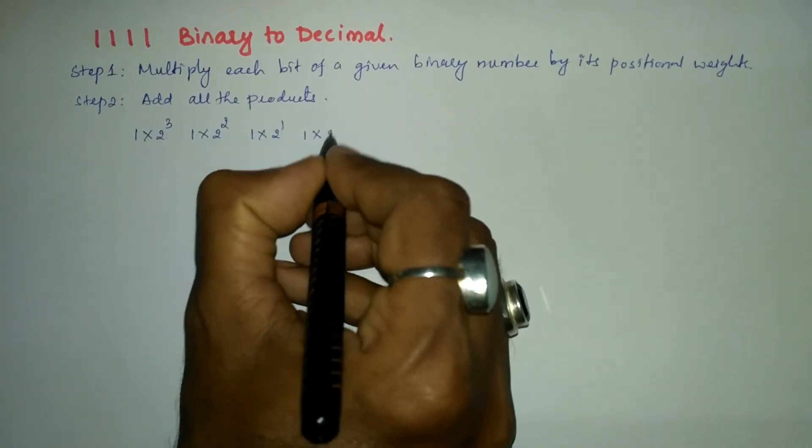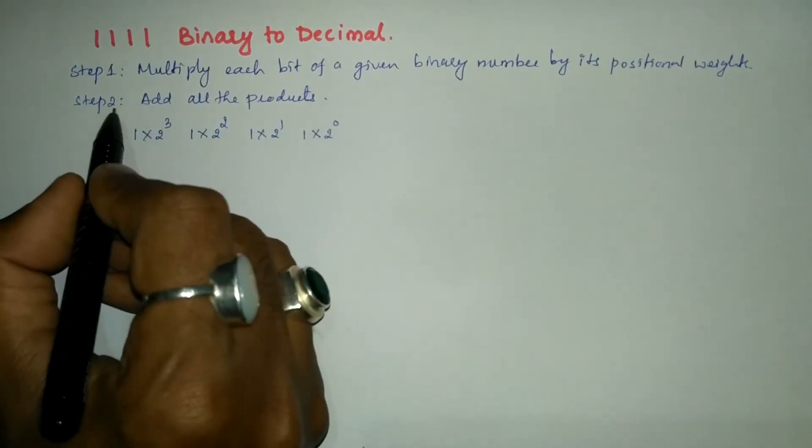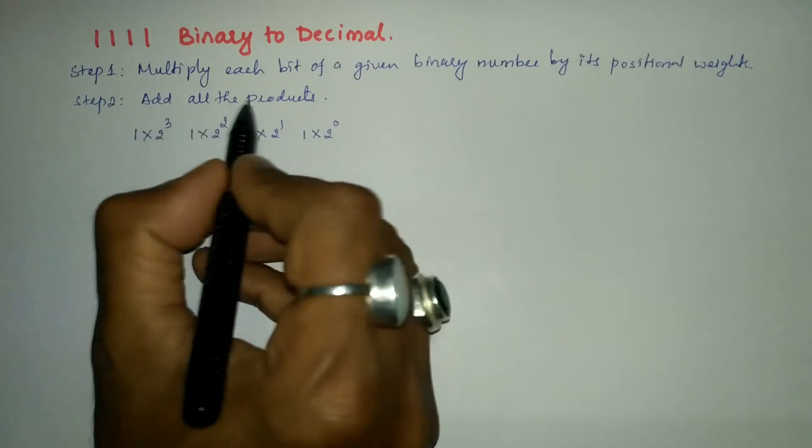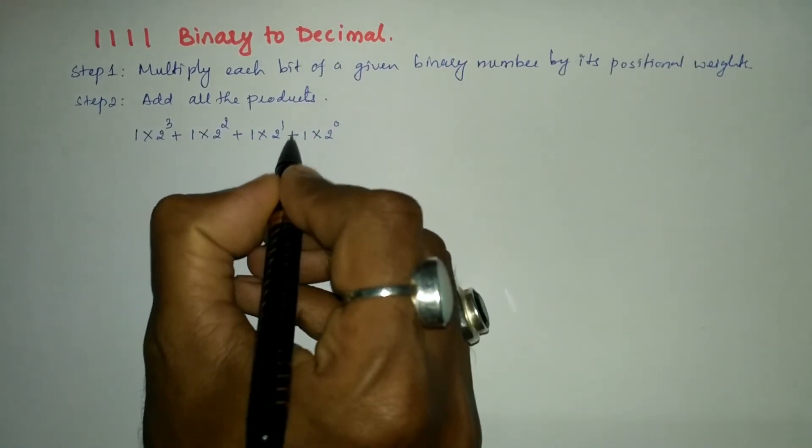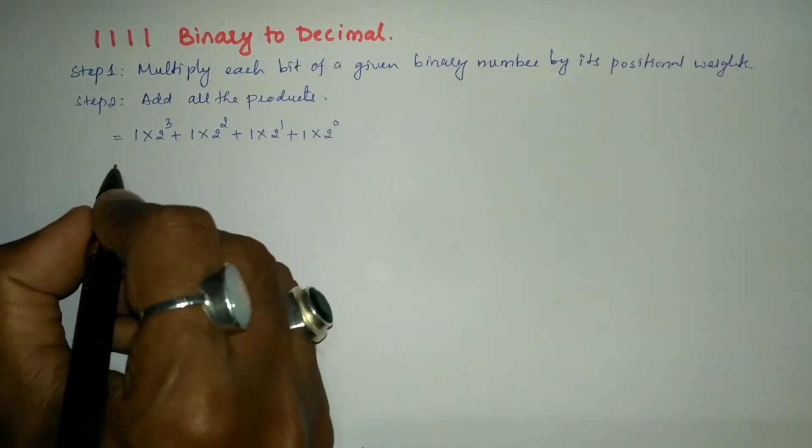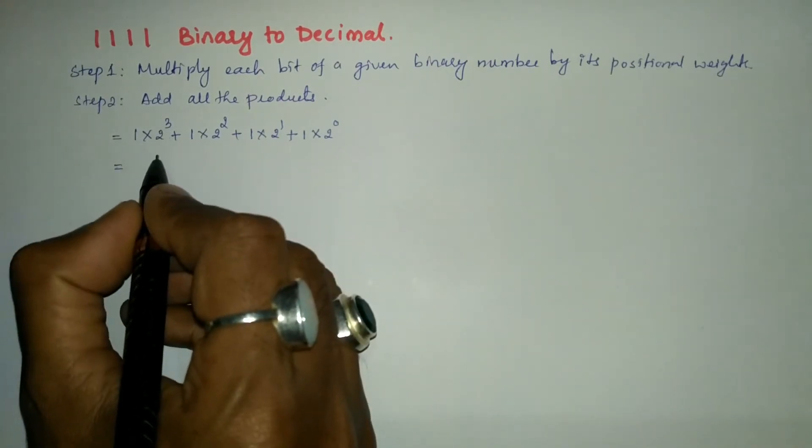Second step says that add all the products, so we are going to add all of these products. Now let us further simplify: 2³, so 2 is to be multiplied three times, 2 × 2 × 2 = 8.